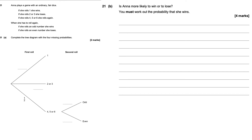This is question number 21. Anna plays a game with an ordinary fair dice. If she rolls a one she wins; a two or a three she loses; a four, five, or six she rolls again. When she rolls again, odd means she wins and even means she loses. Part A: complete the tree diagram with the four missing probabilities. The probability of rolling a one is one-sixth. A two or a three is one-sixth plus one-sixth, which is two-sixths, the same as one-third.